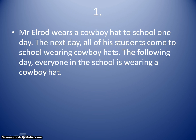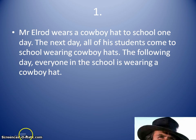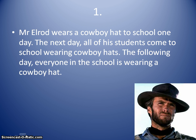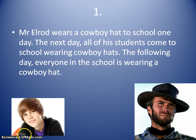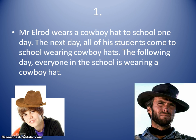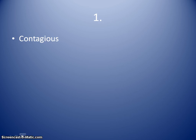The following day, everyone in the school is wearing a cowboy hat. You'll notice in the bottom right there's a picture of Mr. Elrod — he has a strange resemblance to Clint Eastwood. So what type of diffusion is this? This is contagious diffusion. The reason is that we see it moving very rapidly through the population, indiscriminate of who it is. It doesn't matter — everyone in the school is wearing the cowboy hat. It moves from Mr. Elrod's class to the entire school within a matter of two days, so it's very rapid and indiscriminate of the individual.